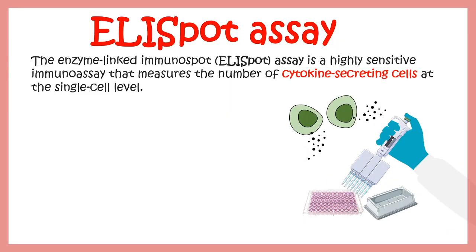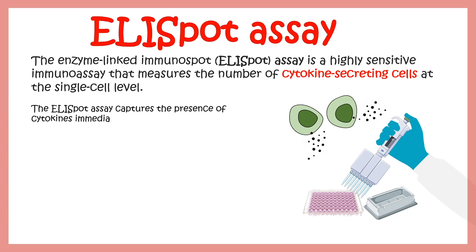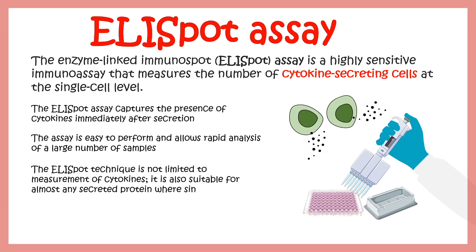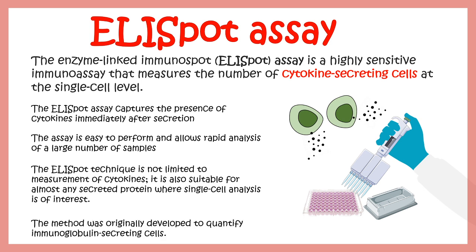In this video we'll talk about the ELISPOT assay, which is an immunoassay used to determine the number of cells secreting cytokines. The ELISPOT assay captures the presence of cytokine-producing cells in a patient sample, such as plasma or serum. The assay is simple and easy to perform, making it a preferred diagnostic tool. It is not limited to cytokines but can also determine other cell types secreting certain proteins. ELISPOT was originally discovered to quantify immunoglobulin-producing cells.